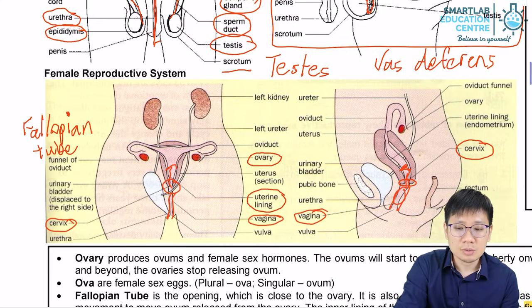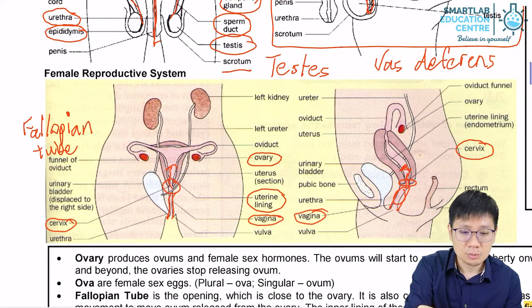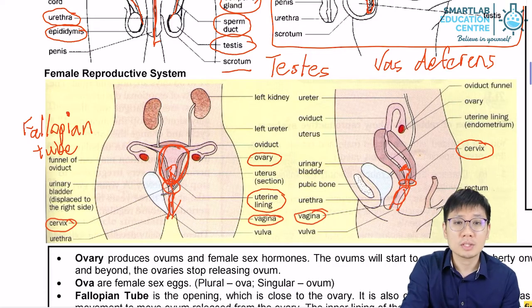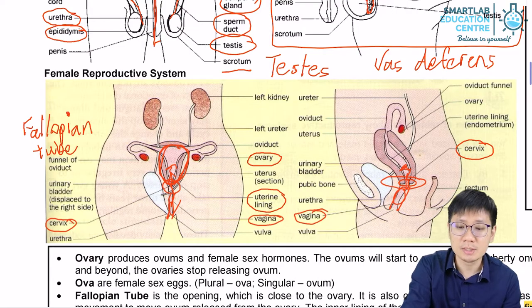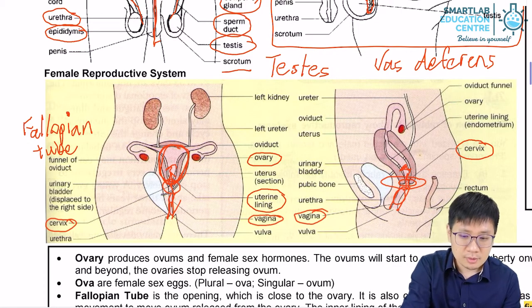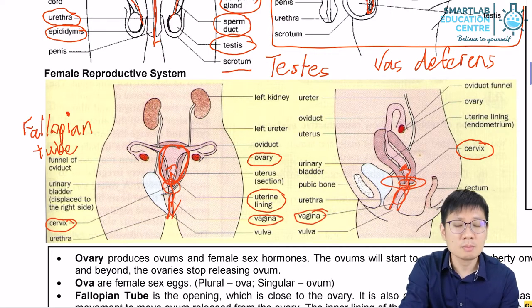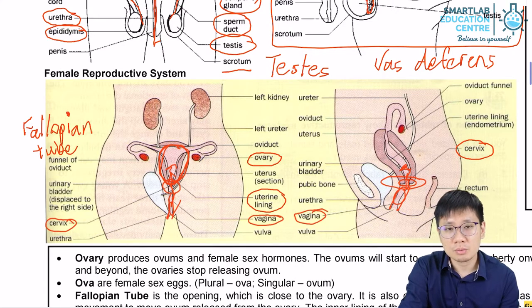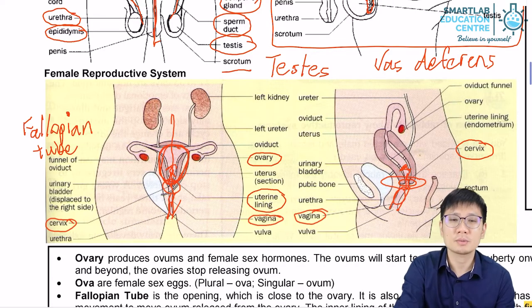The cervix and the vagina also constitute the birth canal — the path through which the baby is born. If there is a pregnancy and a fetus develops within the uterus, it will exit through the cervix and through the vagina. During that process, the cervix will dilate, meaning it will become much bigger so the baby can go through it. In some cases where this cannot be done — perhaps the hip bone of the mother is too small or due to medical complication — the baby can be delivered through a cut over the abdomen and uterus, called a caesarean section, also known as a C-section.